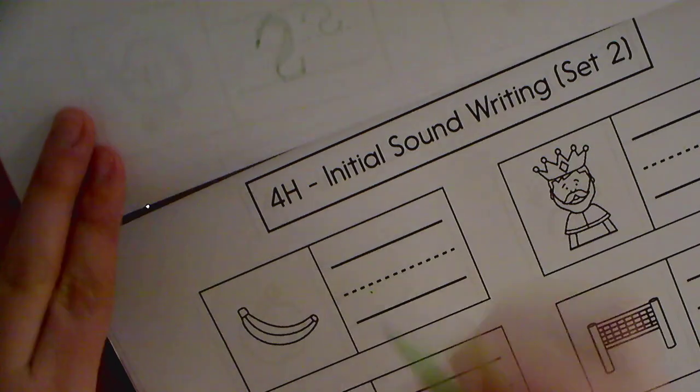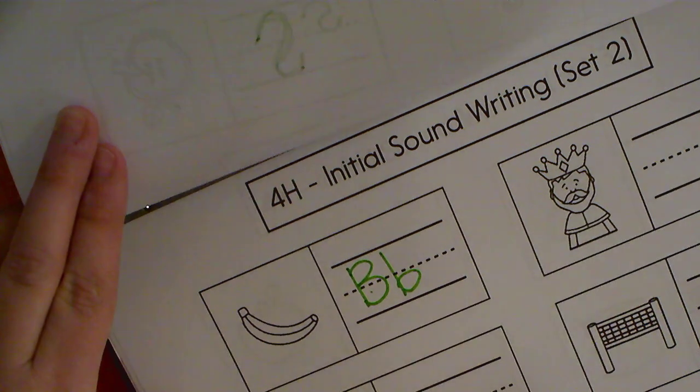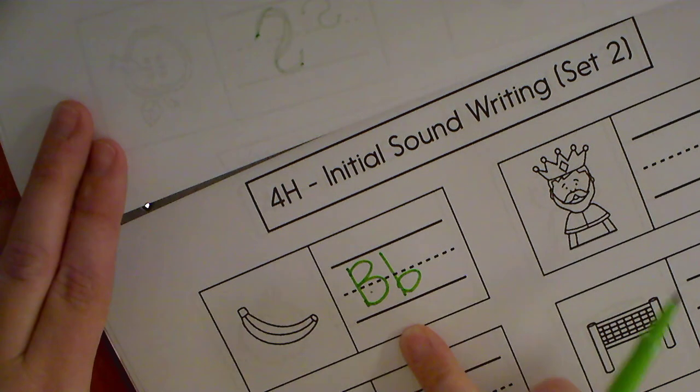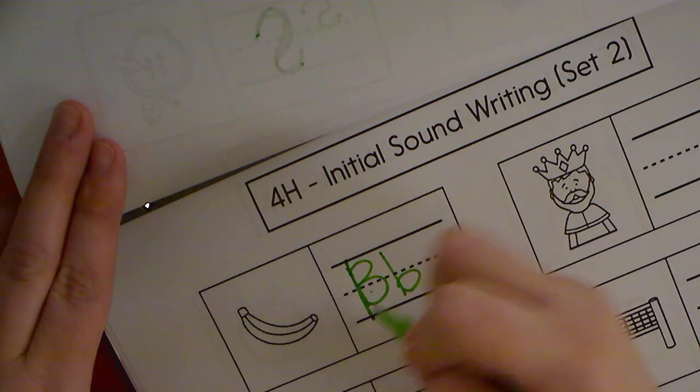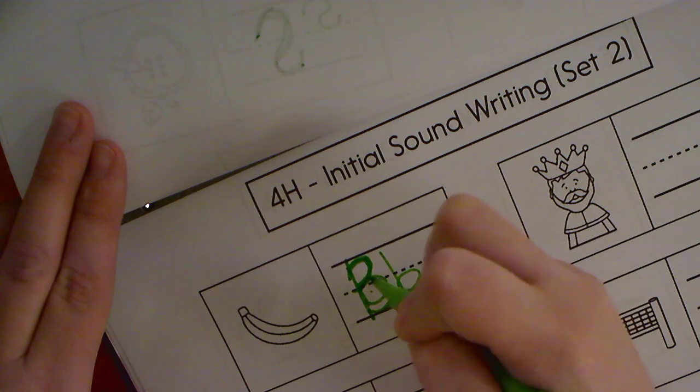So this is a banana, so it would be a B. And we're writing it to where it fits on the line. So your capital B would go all the way up, this circle would go to the middle line, and this circle would go to the bottom line.